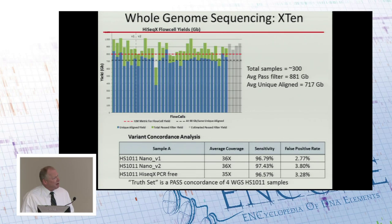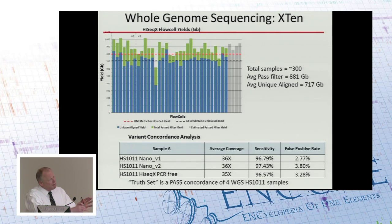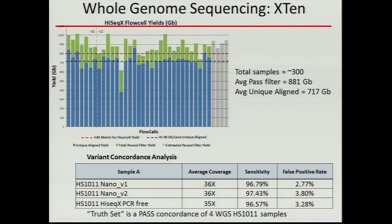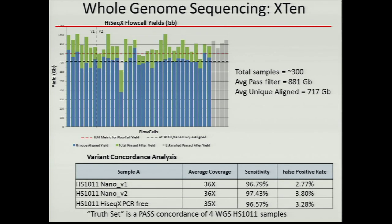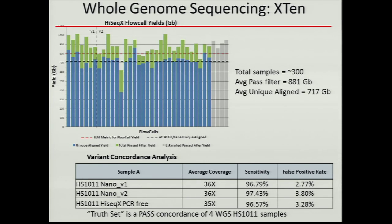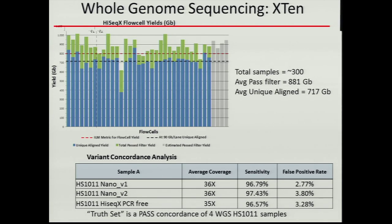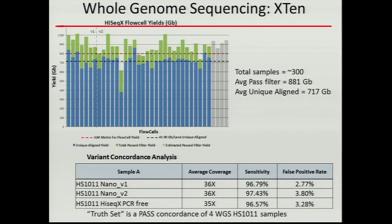The black line here is a threshold we use as our goal — basically 90 gigabases per lane. This shows variation after a certain amount of burn-in, and we're quite pleased with the performance of these instruments. The sensitivity and false discovery rate can be shown in a variety of ways with array-based SNPs; using our internal truth set HS1011 — which for some of us happens to be a friend who has Charcot-Marie-Tooth himself — we have about 97 percent sensitivity for detecting variants and about a 2.5 to 3 percent false discovery rate.